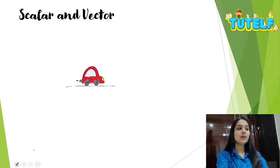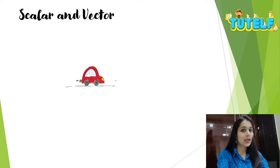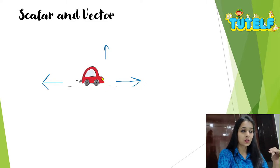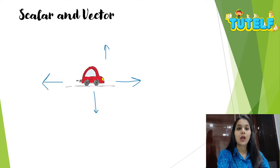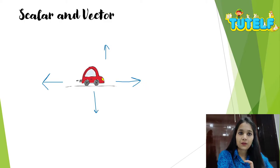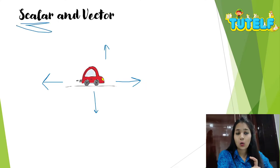You can see on the screen that there is a car. Imagine that I say you have to go 20 kilometers — this car can go in any direction: towards the right, towards north, towards the left, or backwards. When I only specify the magnitude — the distance I have set — then the quantity is said to be a scalar quantity.